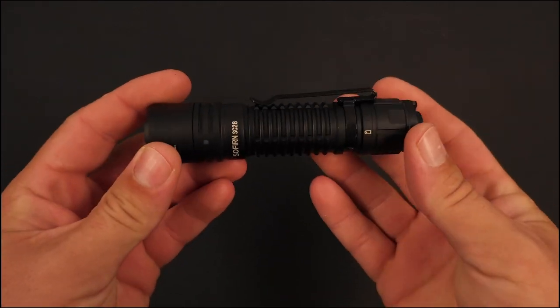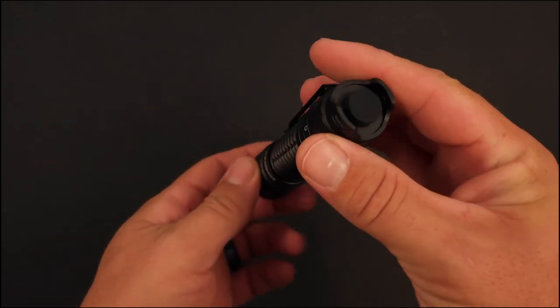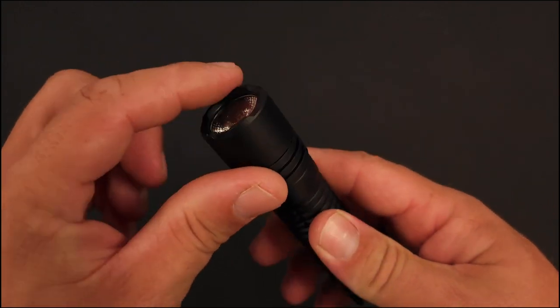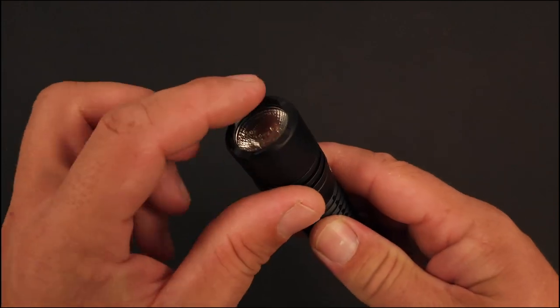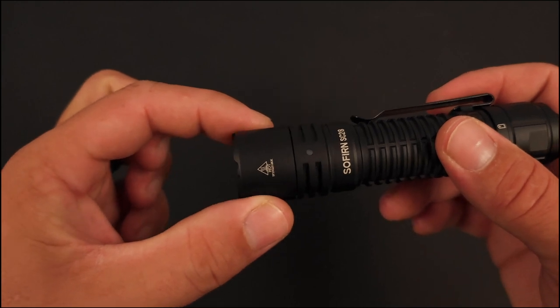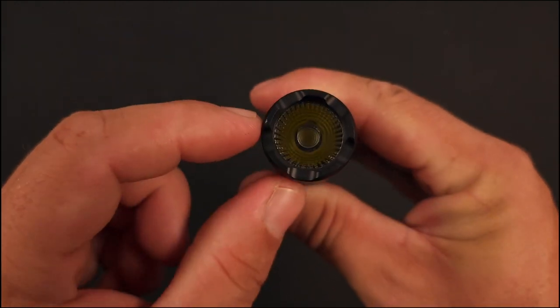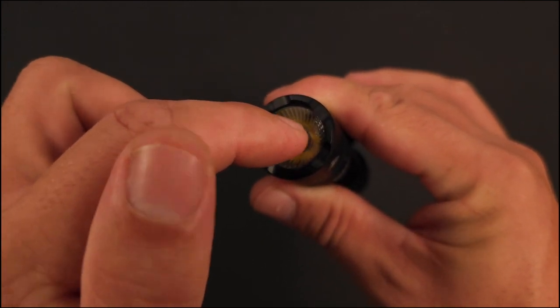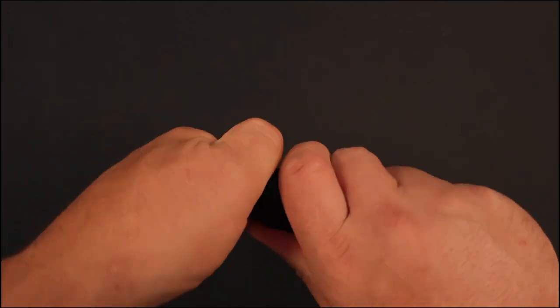Looking at the SC28, especially compared to the Wurkkos TD02, this looks very similar. I want to show you that this does have some slight crenulations on the front or the bezel, and that's reminiscent of their SC32 which has a very long but plain bezel. This is housing this really cool, almost disco ball looking optic with that center section here.